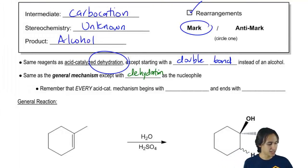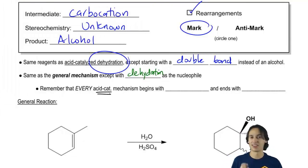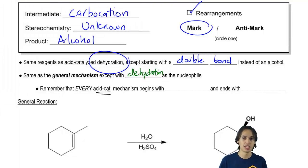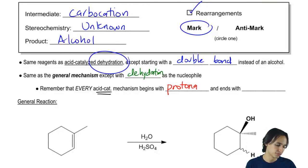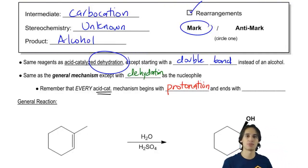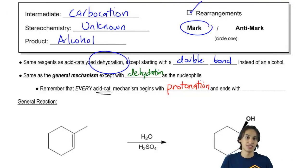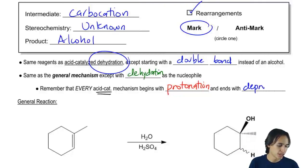Remember that any mechanism that starts with the words 'acid catalyzed' — this is going to apply for Orgo 1 and Orgo 2 — if you ever see the words 'acid catalyzed,' that means it's going to begin with what's called a protonation. That means you're always going to begin with giving something a proton because you have an acid. Acids like to donate protons, at least Brønsted-Lowry acids do. And then it's always going to end with deprotonation.